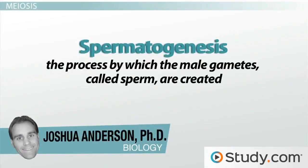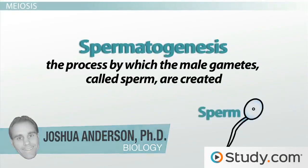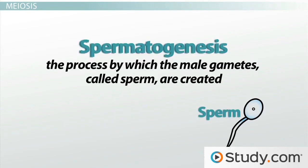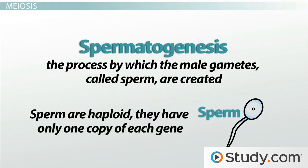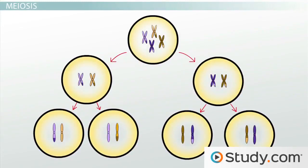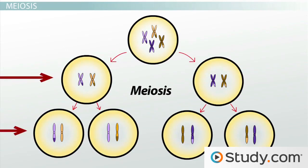Spermatogenesis is the process by which the male gametes, called sperm, are created. In order to create sperm that can combine with a female gamete, each sperm must be haploid and contain only one copy of each chromosome. In order to create haploid gametes, a cell must go through the process of meiosis, which involves replicating its genome and then dividing not once, but twice, in order to create four haploid gametes from a single diploid cell.